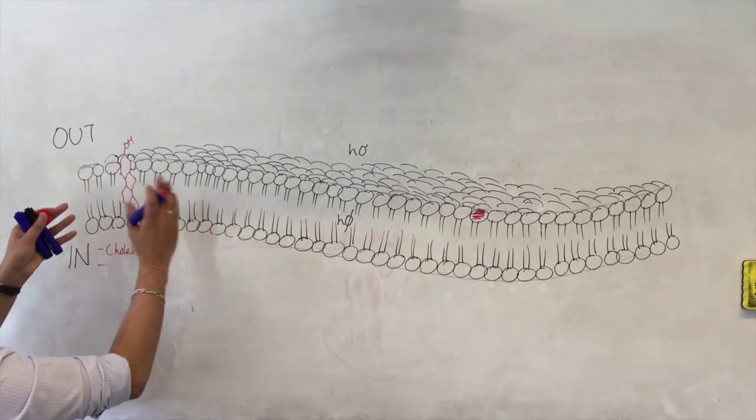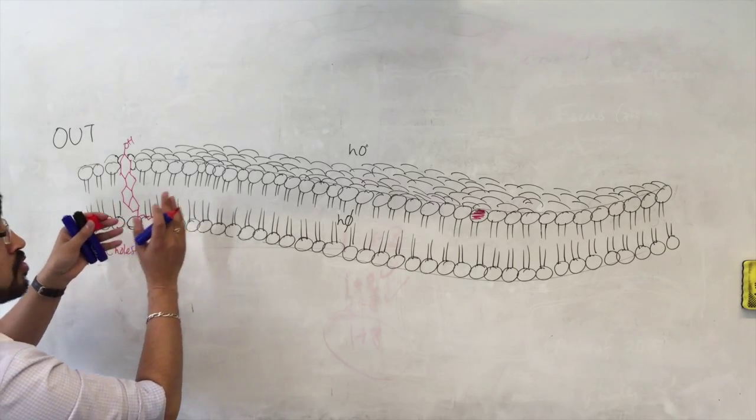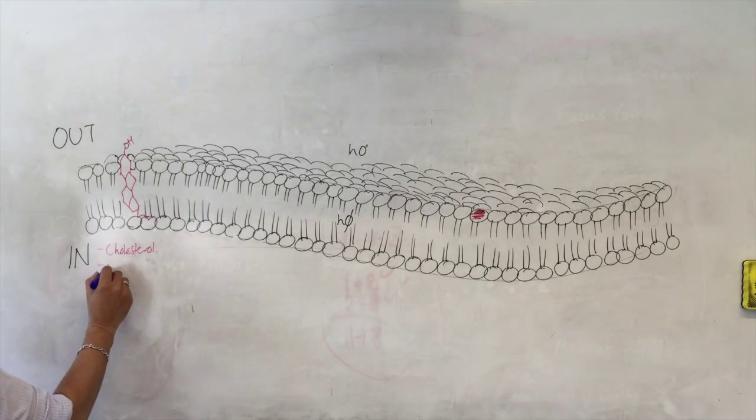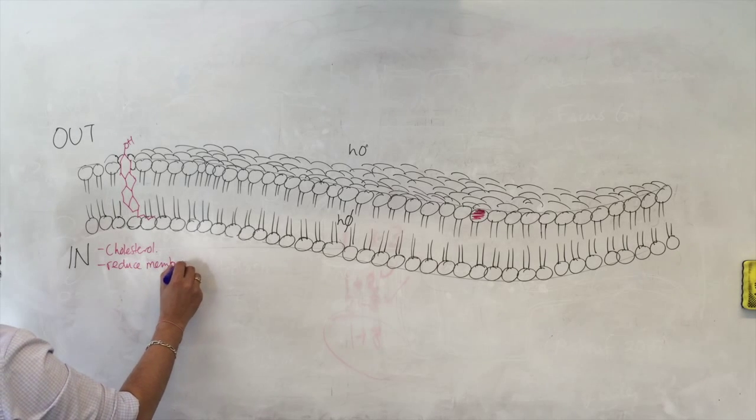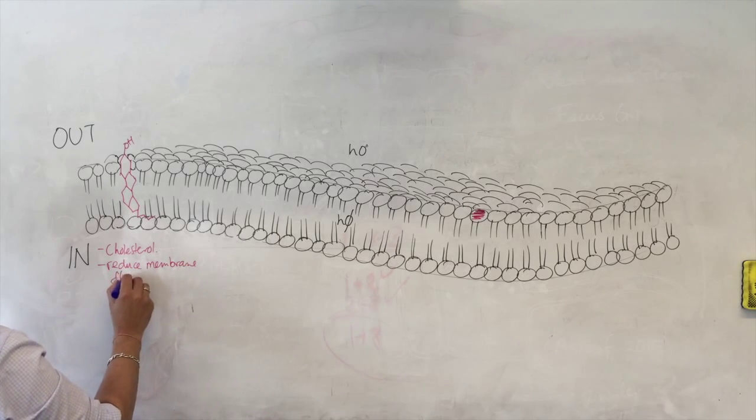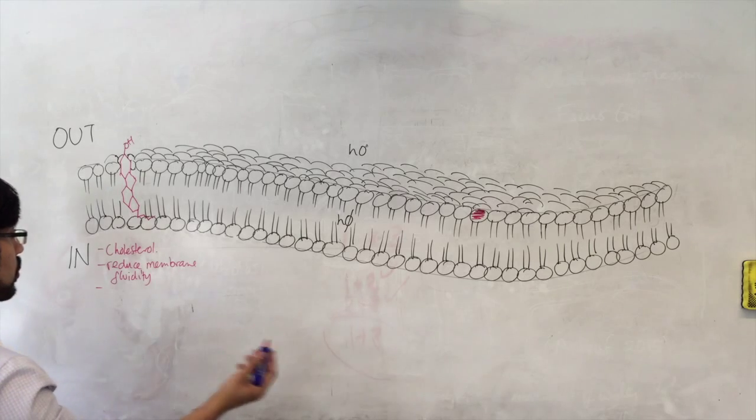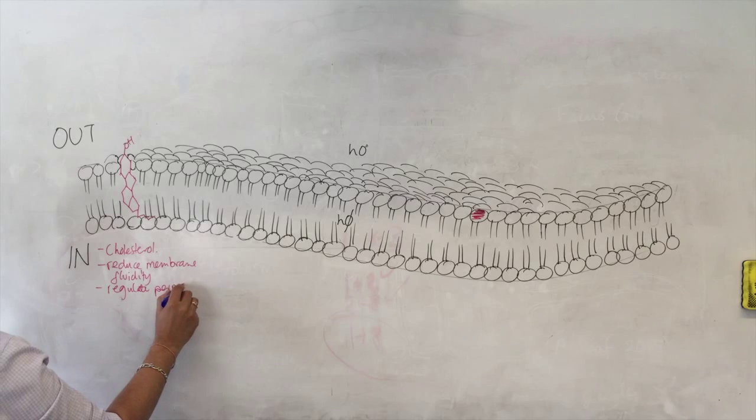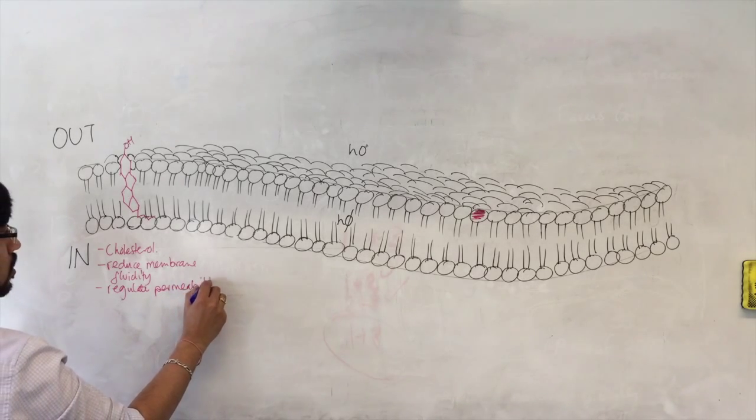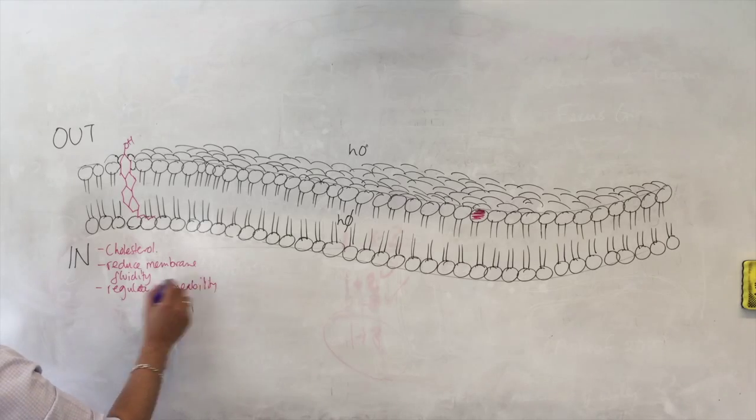Wherever there's cholesterol, the movement of the lipids gets a bit obstructed, and because of that, cholesterol is said to reduce the membrane fluidity. That's how it affects the membrane, and effectively, what that helps to do is helps to regulate the permeability of the membrane.